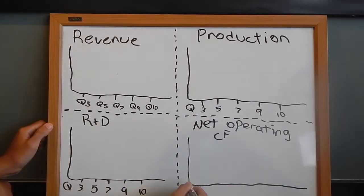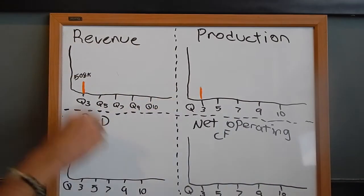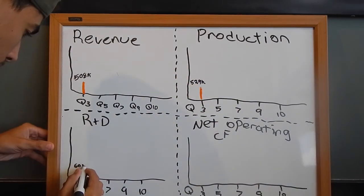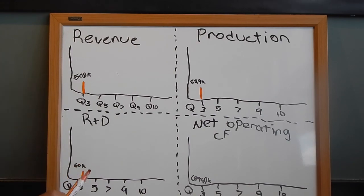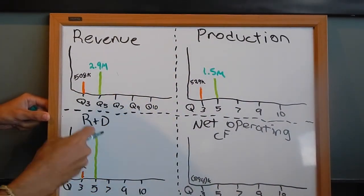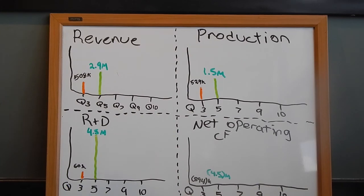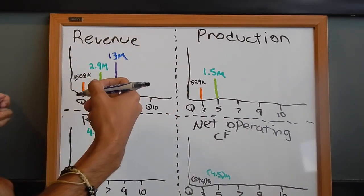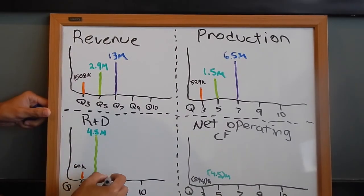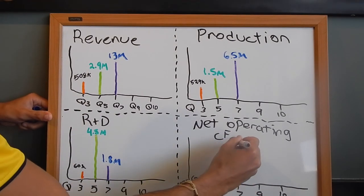For quarter three, it was the first quarter that we received revenue of $508k. Our cost of production was $529k. Our research and development was $60k. And our net operating cash flows was negative $894k. For quarter five, our revenues were $2.9 million. Our production costs were $1.5 million. Our research and development was $4.5 million, which we paid with the venture capital fair common stocks. And our net operating cash flows was negative $4.5 million. For quarter seven, our revenues were $13 million. Production costs, $6.5 million. Research and development, $1.8 million. Net operating cash flows, $1.9 million, which was the first quarter that we received a positive amount.